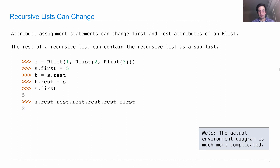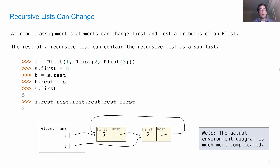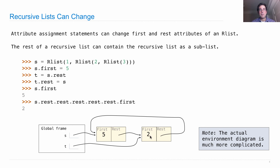Well, S.first is 5 because we set it and haven't changed it. And S.rest.rest.rest.rest.rest.rest.first is 2. Why? Because S has first element 5, and the rest of the list was 2, 3. We set T to be bound to the rest of that list, and then changed the rest of T to be S itself. So in a box-and-pointer diagram, the rest of T points back to S. That's why traversing rest repeatedly eventually lands on the element 2.